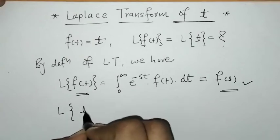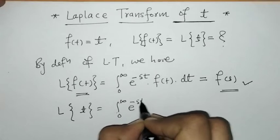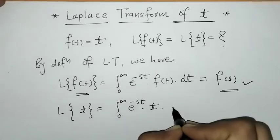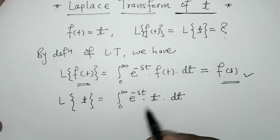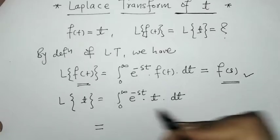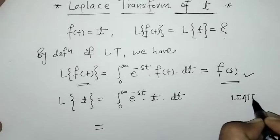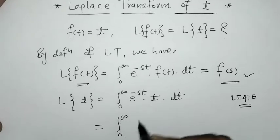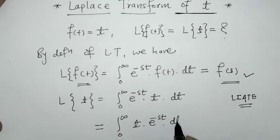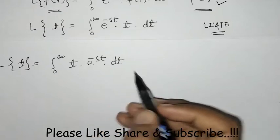So we will put f(t) = t, giving us the integral of e raised to minus st times t. Now we have to solve this integral. We will arrange these two functions by the ILATE rule — we have an exponential and an algebraic function, so we write t first and then e raised to minus st.